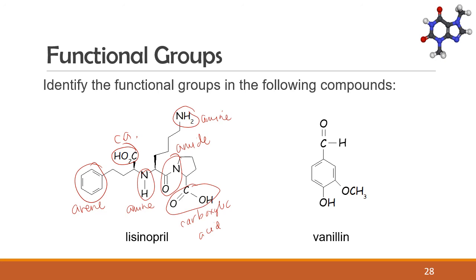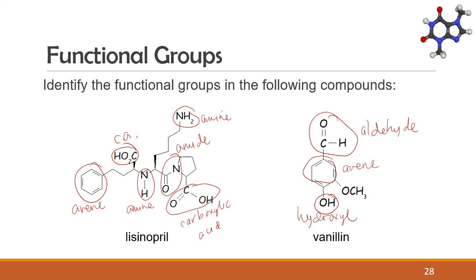Now let's go to vanillin. Vanillin also has four functional groups: an arene, an aldehyde, a hydroxyl group, and an ether — where the oxygen is bonded to two carbon atoms. What this exercise tells us is that large compounds can have more than one functional group. As we discuss these functional groups in more detail in succeeding modules, you will learn more about the order of precedence of functional groups when it comes to naming compounds.